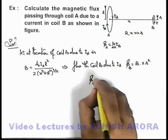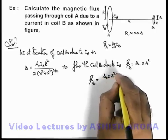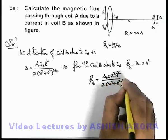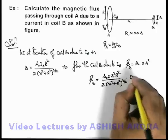So here the value of Φ_B we are getting is μ₀ πr²R² / 2(x² + R²)^(3/2) multiplied by current through the coil A.